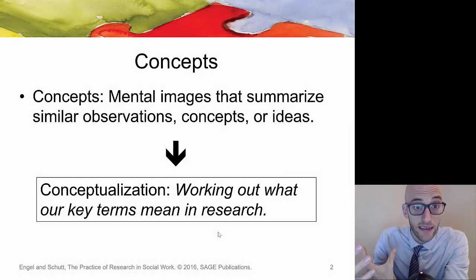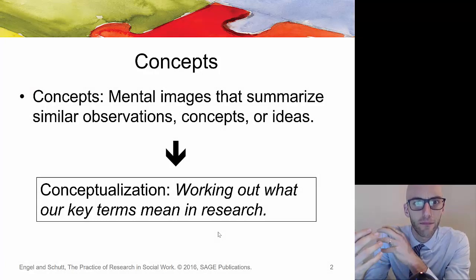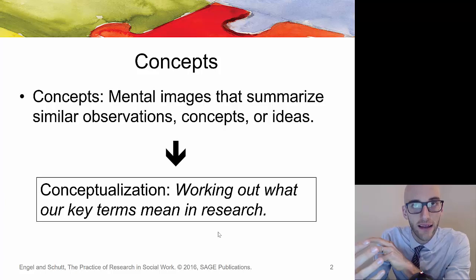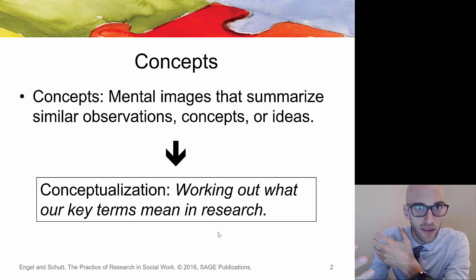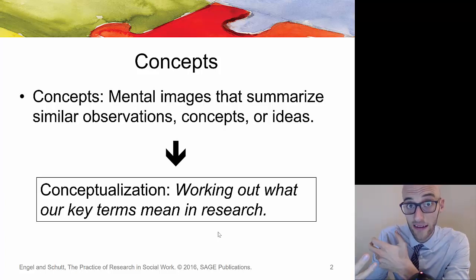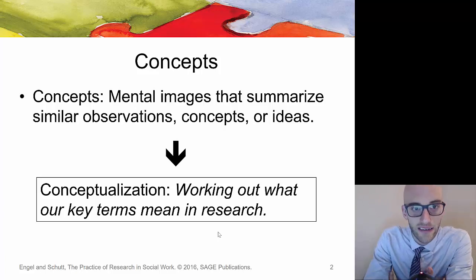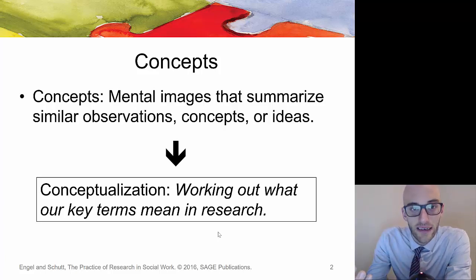As opposed to the natural sciences, social sciences are unique in that a lot of the concepts we're measuring are more abstract than something like distance, speed, or temperature. In social science we deal with concepts — mental images that summarize similar observations, concepts, or ideas. As opposed to an operational definition, a conceptualization is more about working out what a term really means in research.